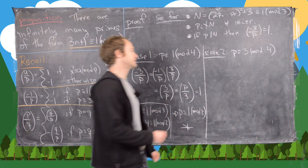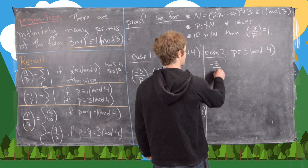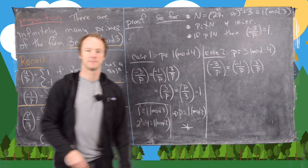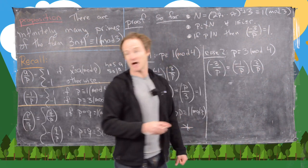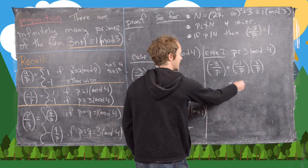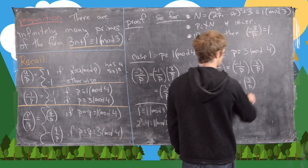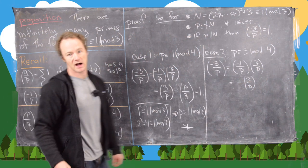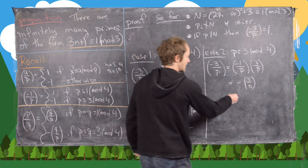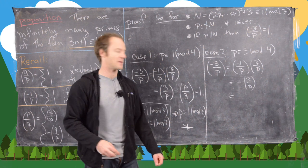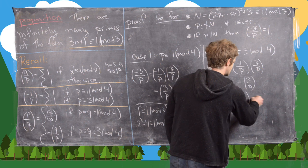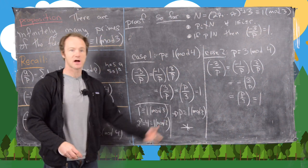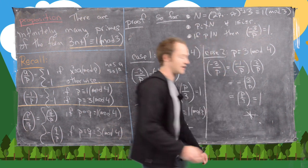Case 2: p is congruent to 3 mod 4. We again start from negative 3 by p equals 1, split as negative 1 by p times 3 by p. Now since p is congruent to 3 mod 4, negative 1 by p equals negative 1, giving us negative 1 times 3 by p. Applying quadratic reciprocity — both 3 and p are congruent to 3 mod 4, so we pick up another minus sign — the two minus signs cancel, giving p by 3 equals 1. This is the same contradiction as before, so we're done.